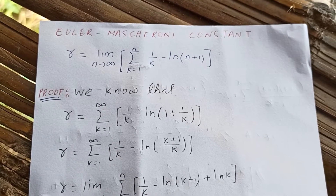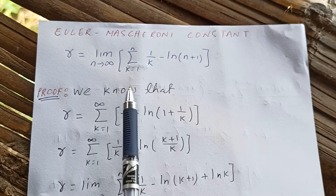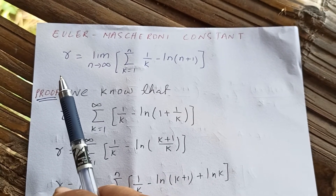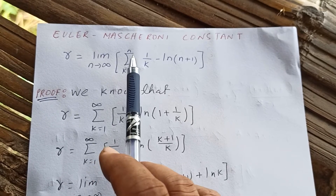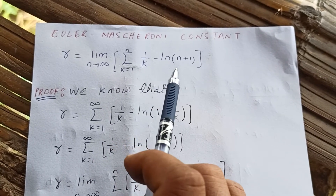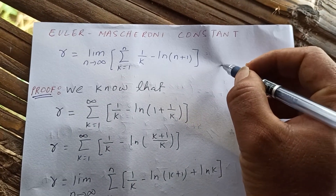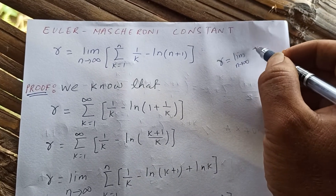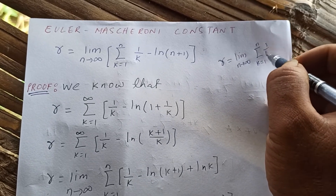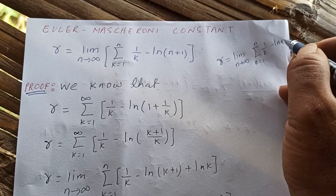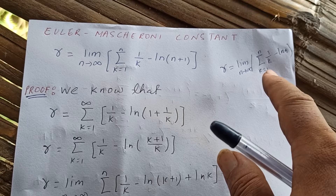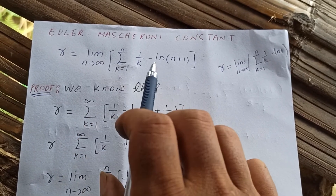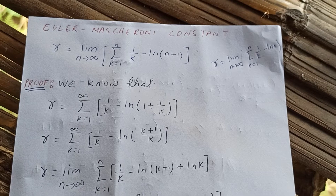Hello guys, thanks for watching my video. Today let's see another representation of the Euler-Mascheroni constant. So gamma is equal to the limit as n approaches infinity of the sum from k equals one to n of one over k minus natural log of n plus one. This is the basic definition of the Euler-Mascheroni constant. If you increase by n plus one, since n approaches infinity, it is the same thing.